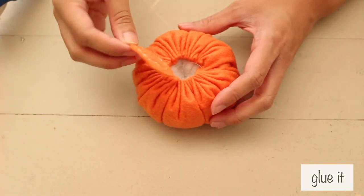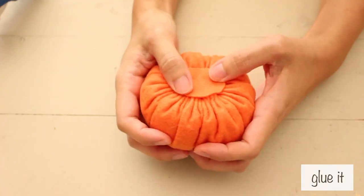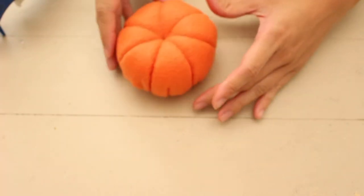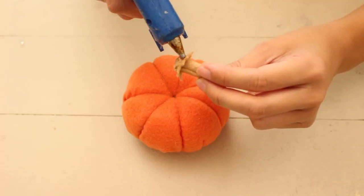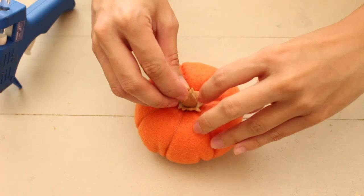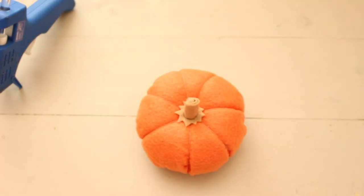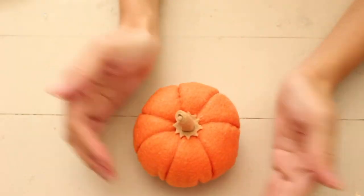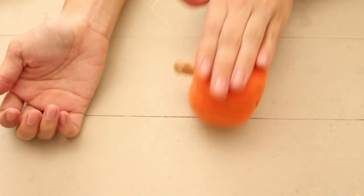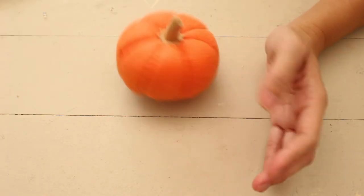Glue the orange circle to the bottom of the pumpkin. Then, glue the stem to the top center along with the spike circle. And, your pumpkin is done.